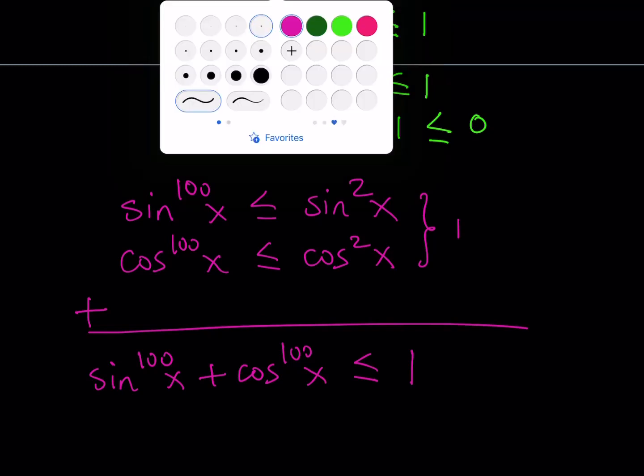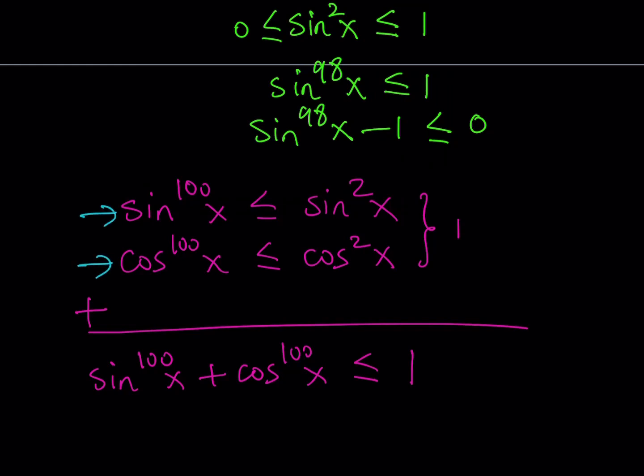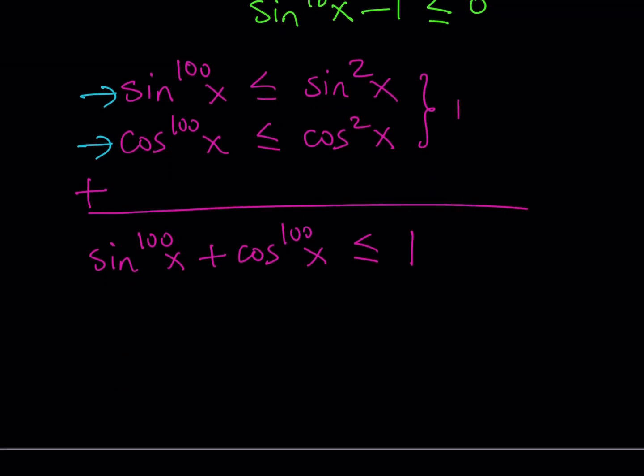What is that supposed to mean then? Well, it means that these two equations, or inequalities I should rather say, they should be equations. So instead of having less than or equal to, I should have, in order for this to be true, I have to have sine x to the power 100 equals sine squared x and cosine x to the power 100 equals cosine squared x. Isn't that beautiful? So this is the power of algebra. From an equation, we got a system. Actually, I should say from an equation, we got an inequality. And from those inequalities, we got a system of equations.